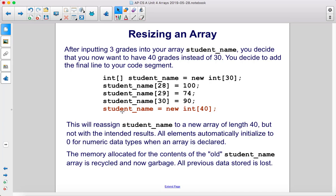This will reassign student_name to a new array of length 40, but not with the intended results. All elements automatically initialize to zero for numeric data types when an array is declared. The memory allocated for the contents of the old student_name array is recycled and now garbage. All previous data stored is lost.